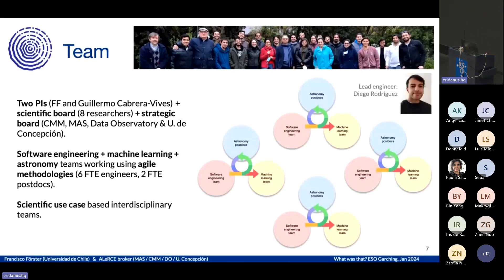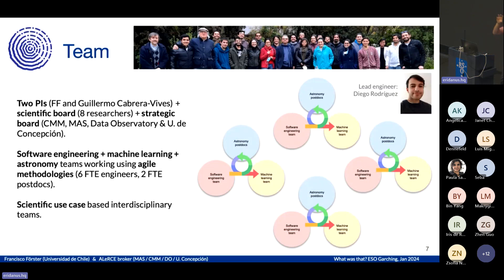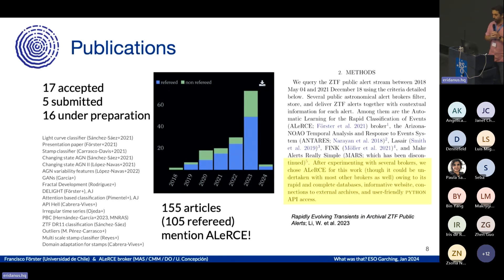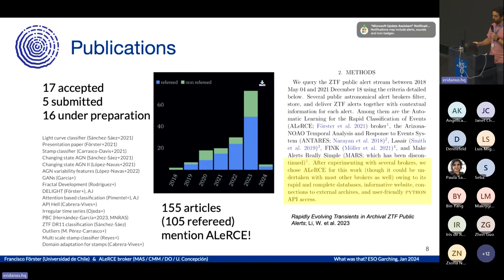The ALERCE team is currently composed of two PIs — myself and Guillermo Cabrera, who will be the next PI of ALERCE. We have a scientific board of eight researchers and a strategic board where funding institutions are represented. We have software engineering, machine learning, and astronomy teams working on different use cases — four parallel teams with six full-time engineers and two postdocs. In terms of publications, we have 17 accepted papers, five submitted, and many under preparation. Impressively, 155 articles mention ALERCE and more than 100 refereed articles use ALERCE data.